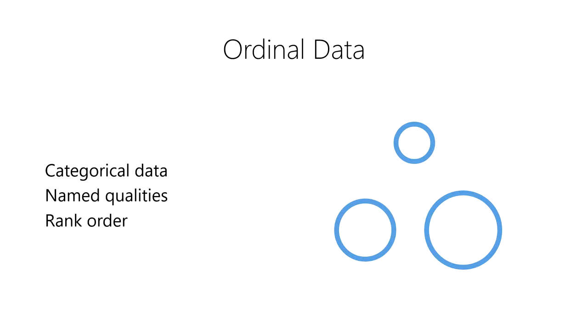However, ordinal data do have a natural rank order to them, so they can be sorted in order by their rank.